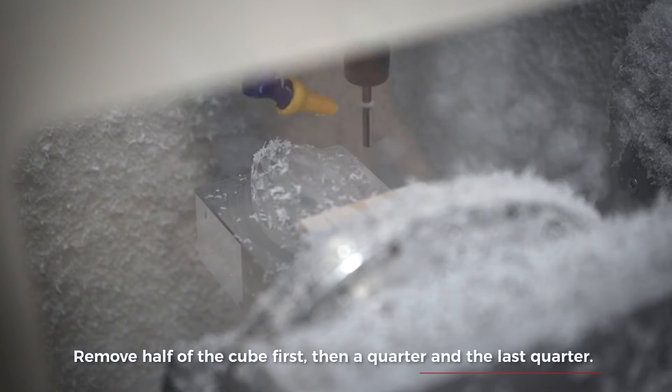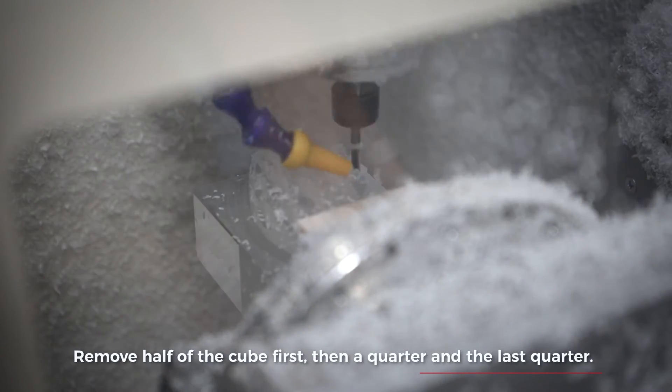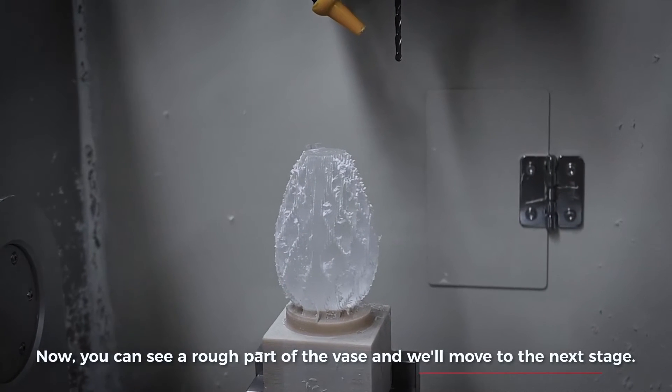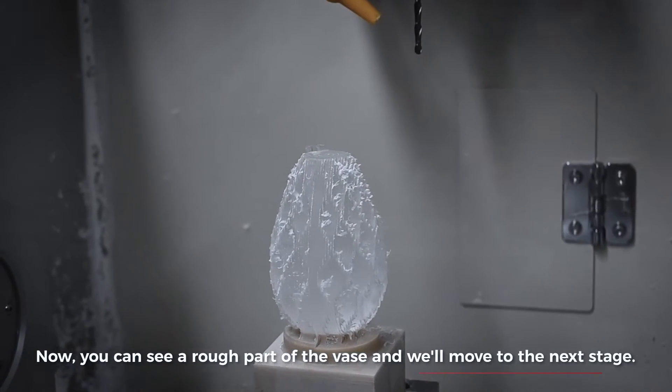Remove half of the cube first, then a quarter, and the last quarter. Now you can see a rough part of the base and it will move to the next stage.